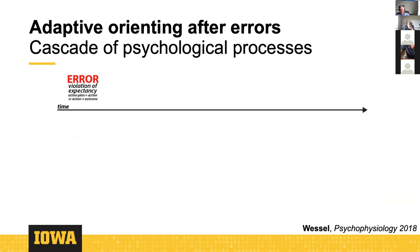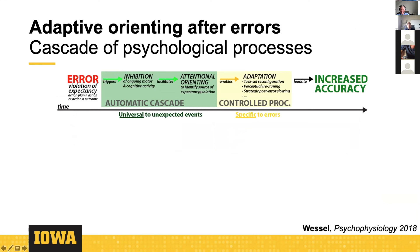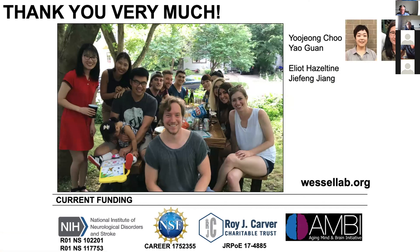To sum up, we now have some evidence that errors inhibit ongoing cognitive activity. There is still much work to be done — this is our first foray into this domain. There are also other studies from Fabrice Parmentier and Tobias Egner that have explicitly tested propositions of this adaptive orienting theory, giving it some legs. I want to thank my lab, especially error processing experts Yujong Chu and postdoc Yao Guan, and thank you all for your attention.